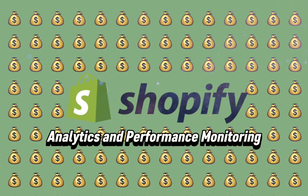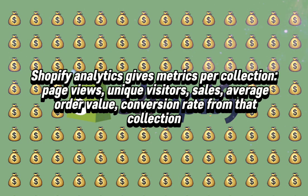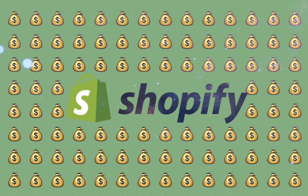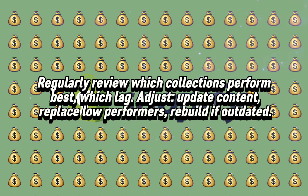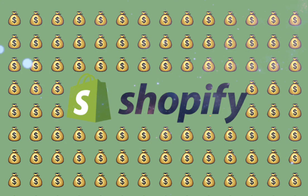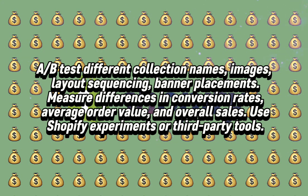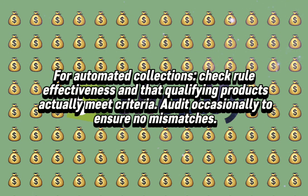Analytics and Performance Monitoring. Shopify analytics gives metrics per collection: page views, unique visitors, sales, average order value, and conversion rate from that collection. Regularly review which collections perform best and which lag — adjust, update content, replace low performers, and rebuild if outdated. A/B test different collection names, images, layout sequencing, and banner placements, measuring differences in conversion rates, average order value, and overall sales using Shopify Experiments or third-party tools. For automated collections, check rule effectiveness and ensure qualifying products actually meet criteria; audit occasionally to ensure no mismatches.